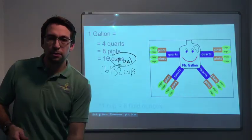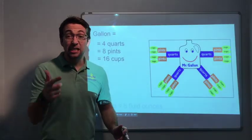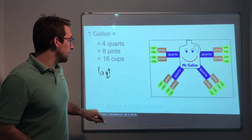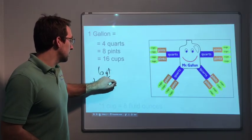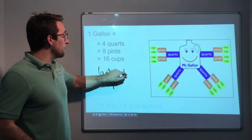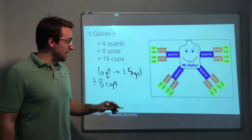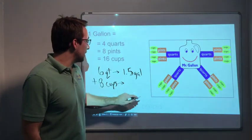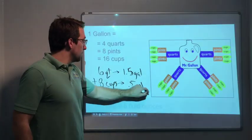What about six quarts plus eight cups? Well, six quarts, that is 1.5 gallons, and then eight cups is half of a gallon, 0.5 gallons. Oh, that's two gallons.